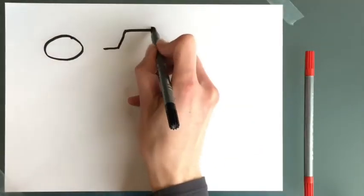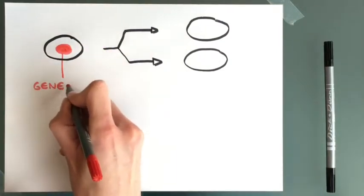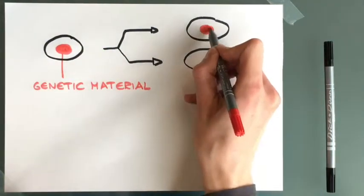Therefore, cell division is an essential process for life. Key to cell division is the transmission of genetic material to both daughter cells.